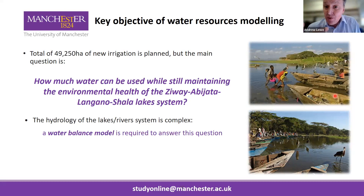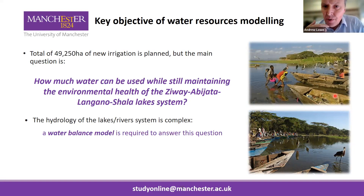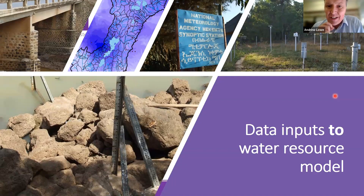We can investigate this using modeling techniques. The course at Manchester focuses quite a lot on data analysis, but I also teach a lot of modeling and try to use real-world examples. I teach water balance modeling so we can investigate whether we can maintain the health of lakes if we introduce new irrigation to the Rift Valley. Let's look at what a water balance model looks like, and first talk about the data that goes into our water resource model.